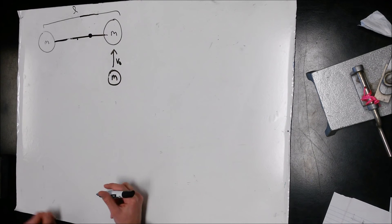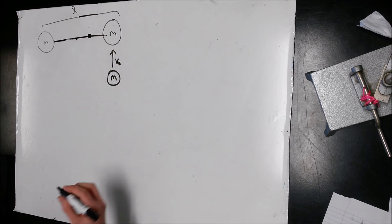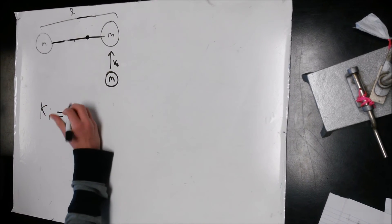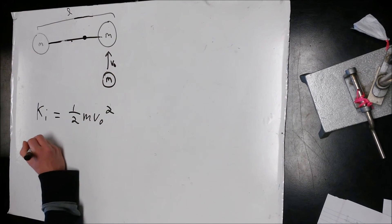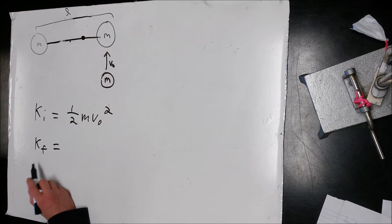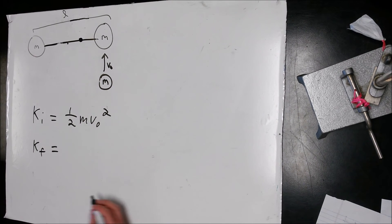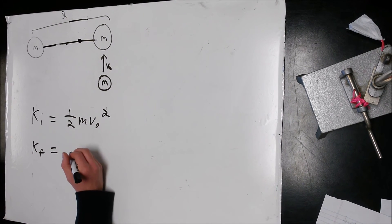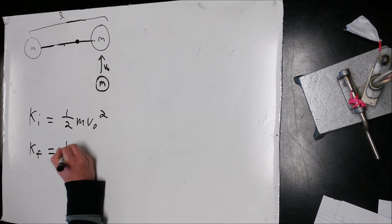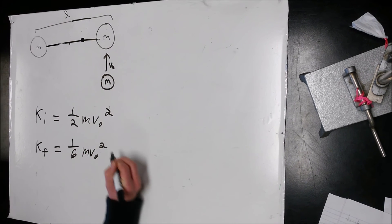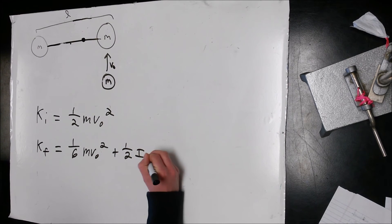The last part asks for the change in kinetic energy before and right after the collision. The initial kinetic energy is one-half MV0 squared. The final kinetic energy must include both translational and rotational kinetic energy. The translational part gives one-sixth MV0 squared, and we add one-half I omega squared.